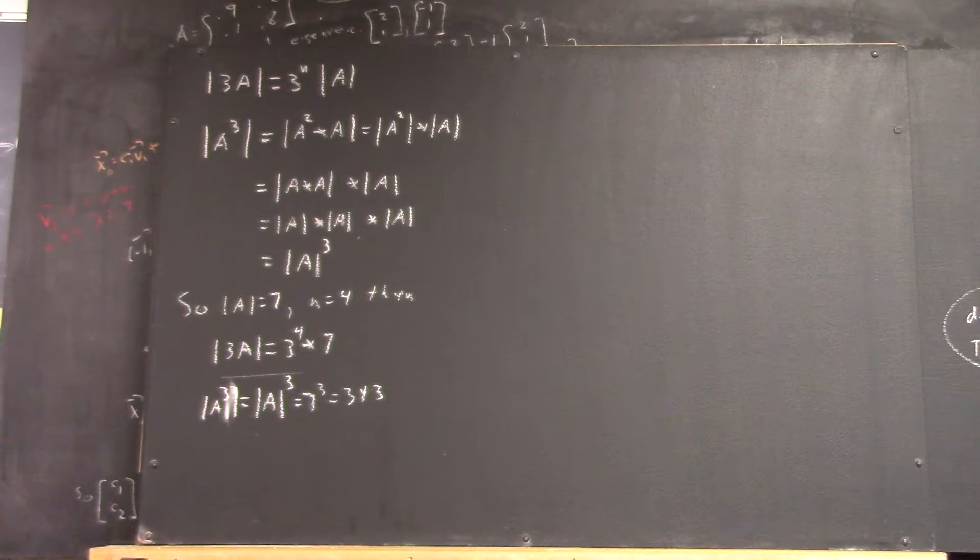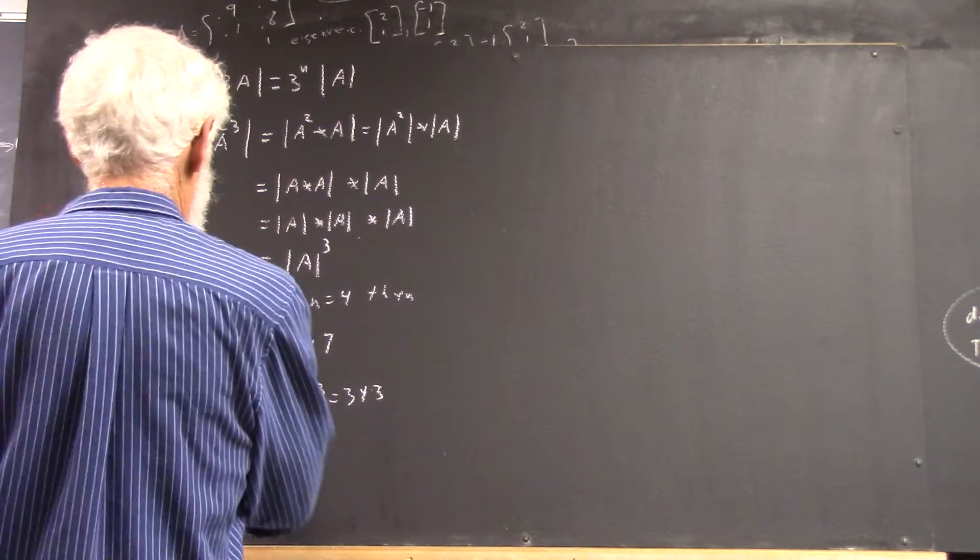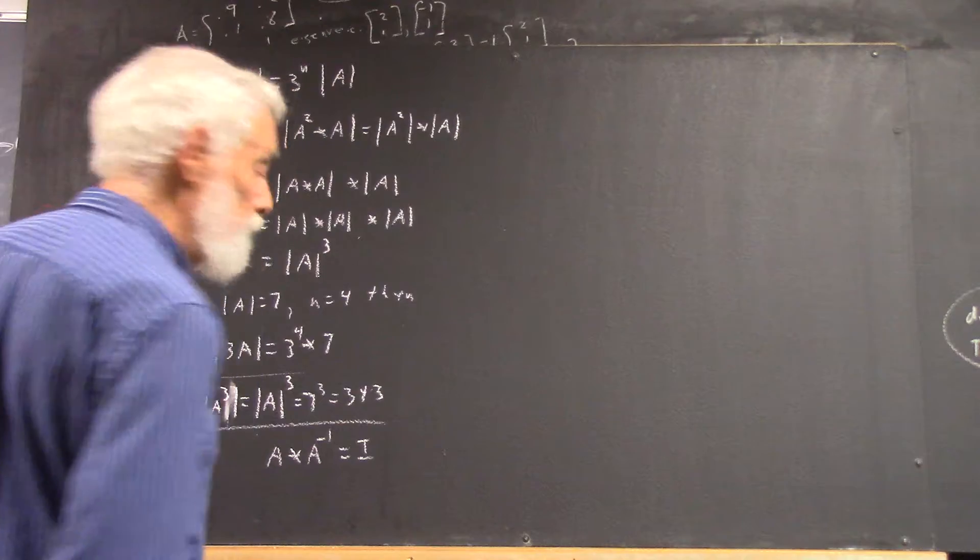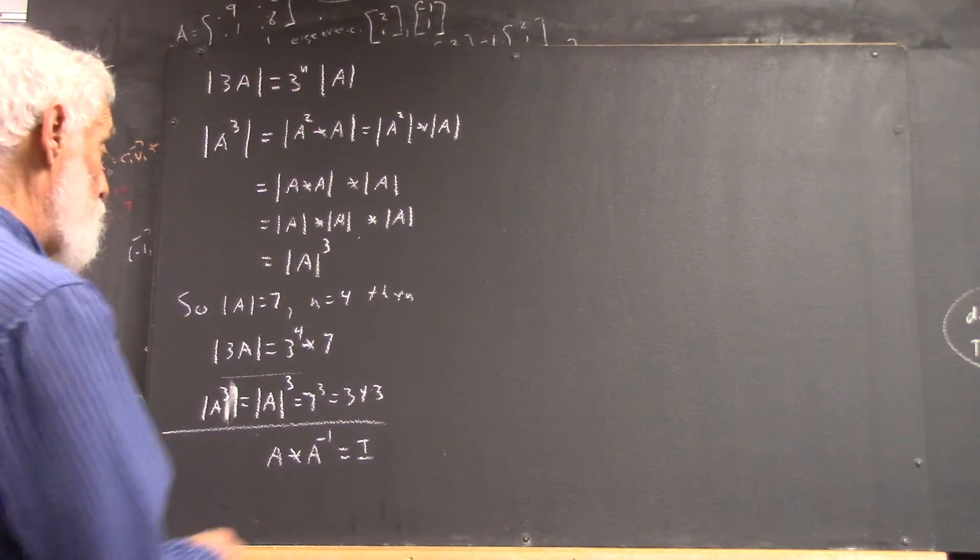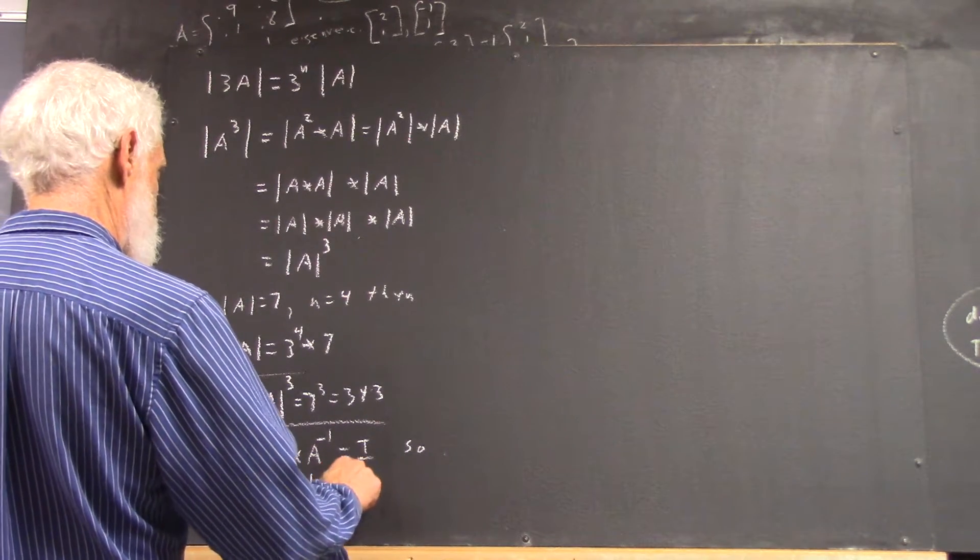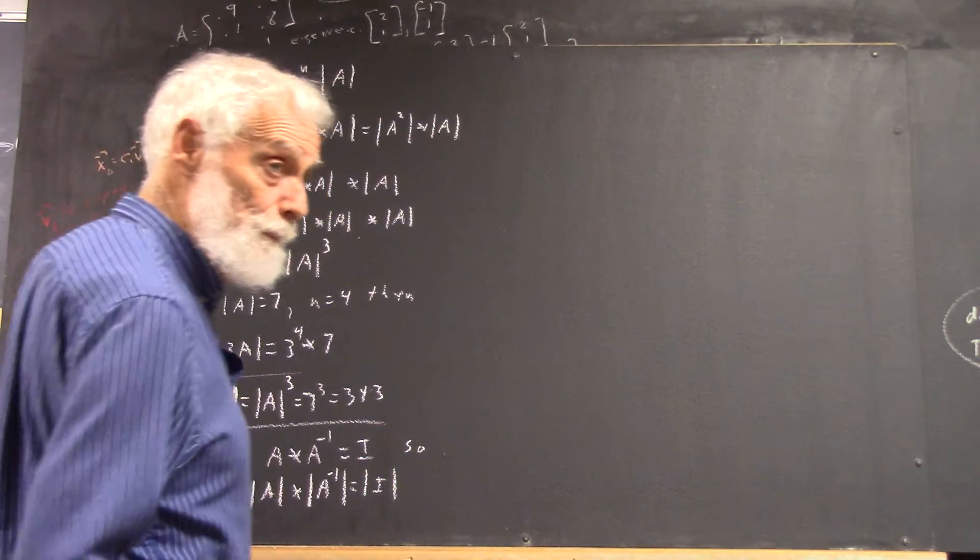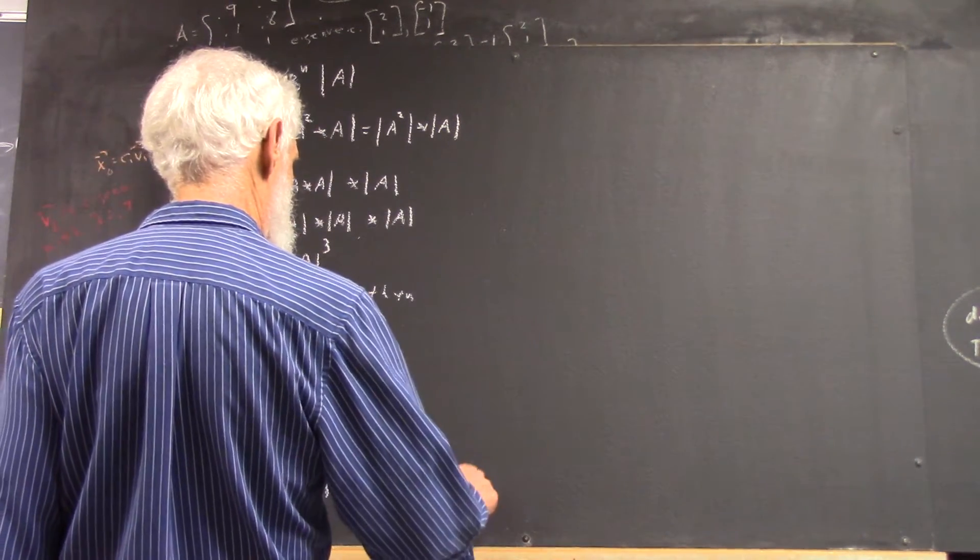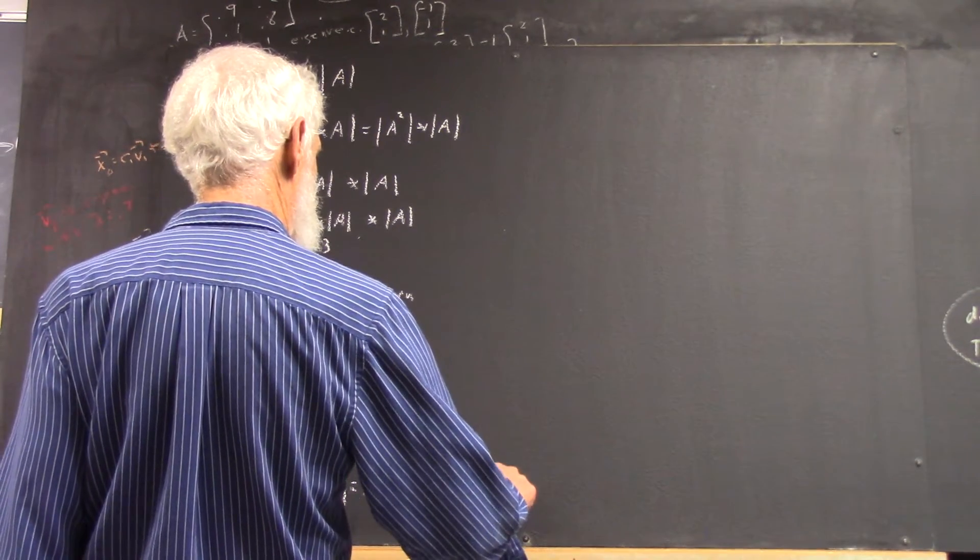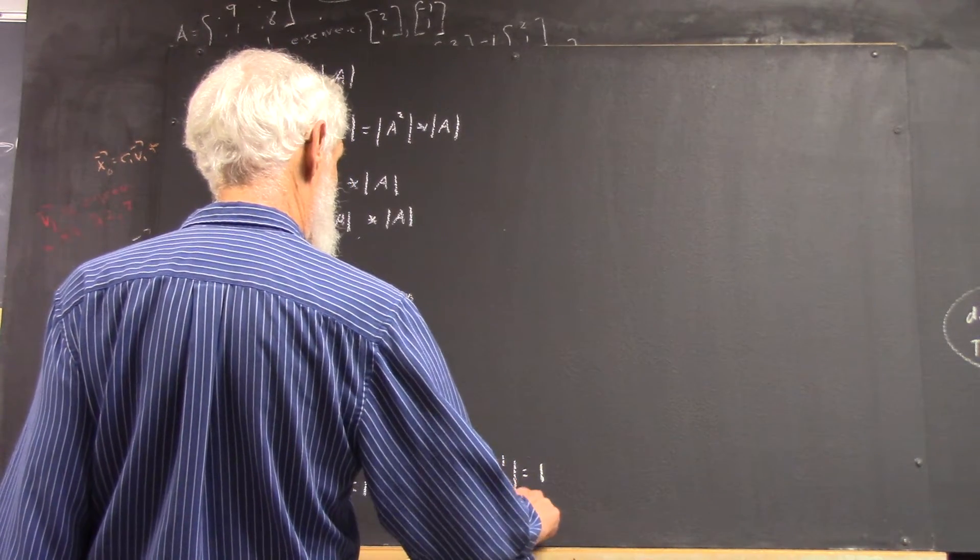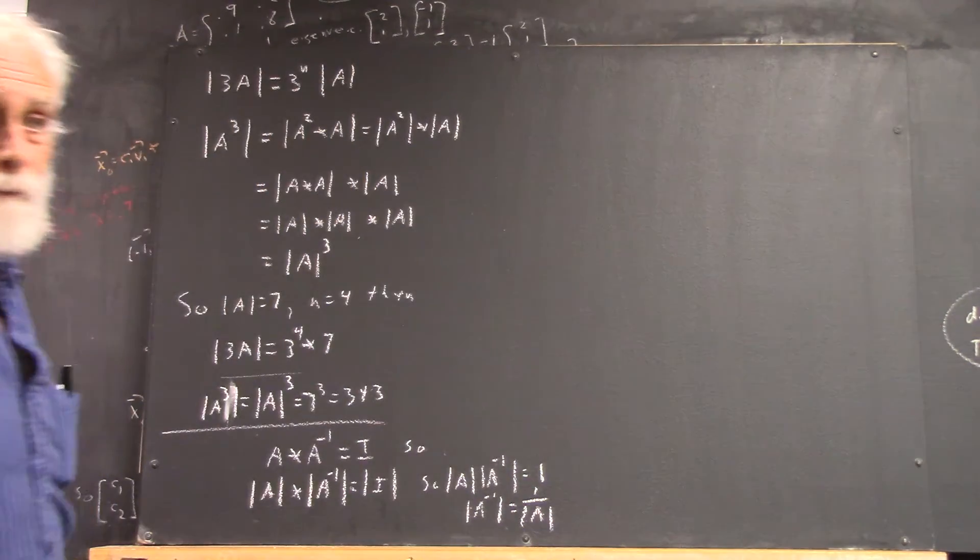Also, why is the determinant of the inverse the reciprocal of the determinant? Well, we wrote that out before. A times A inverse equals the identity, right? So the determinant of A times the determinant of A inverse equals the determinant of the identity matrix. Well, what's the determinant of the identity? So determinant of A times the determinant of A inverse equals 1. Determinant of A inverse is therefore 1 divided by the determinant of A.